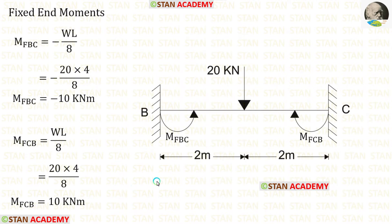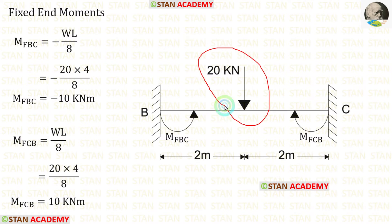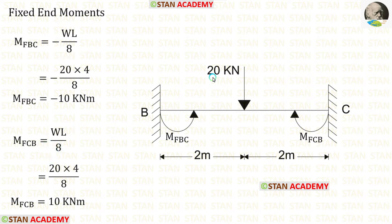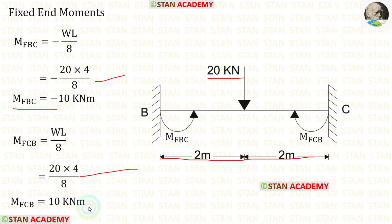Now let us find the fixed end moments in beam BC. In beam BC there is a point load acting at the center. The formulas for the fixed end moments are minus WL upon 8 and positive WL upon 8. Here W is 20 and L is 4. When we apply these values, we get M of BC and M of CB.